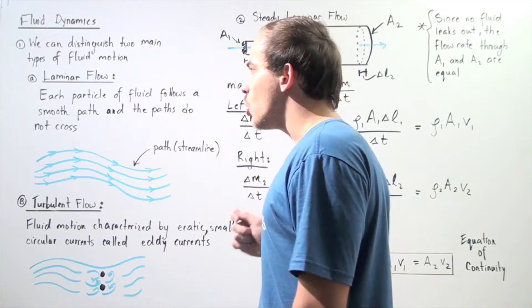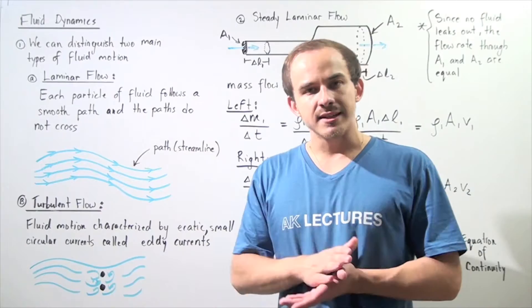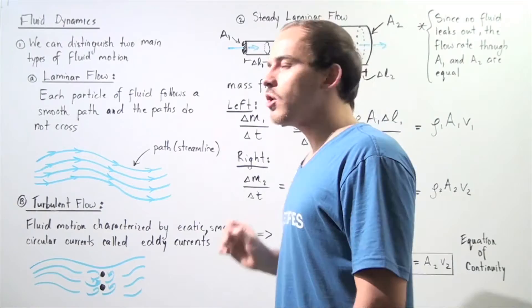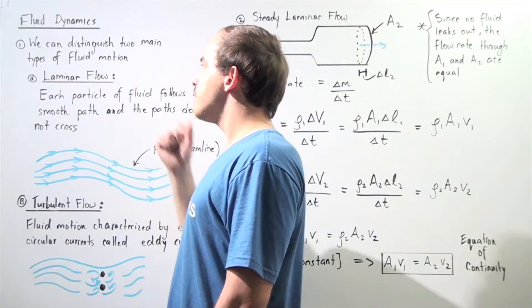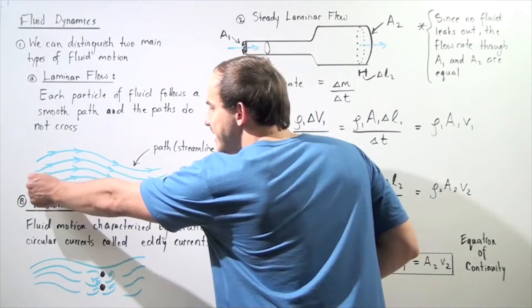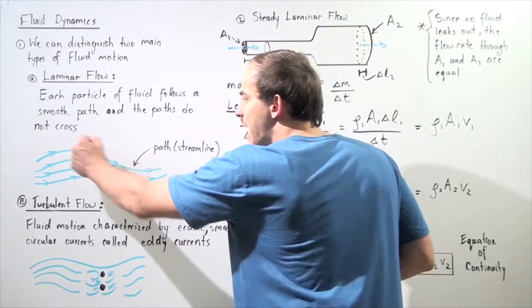Laminar flow is a flow of fluid that consists of very little resistance, and that's because each particle within that fluid follows a smooth specific path, and the paths of two or more fluid particles never actually cross. If we draw a diagram for laminar flow, each blue path represents the path of the fluid particle — these paths, also called streamlines, never actually cross.